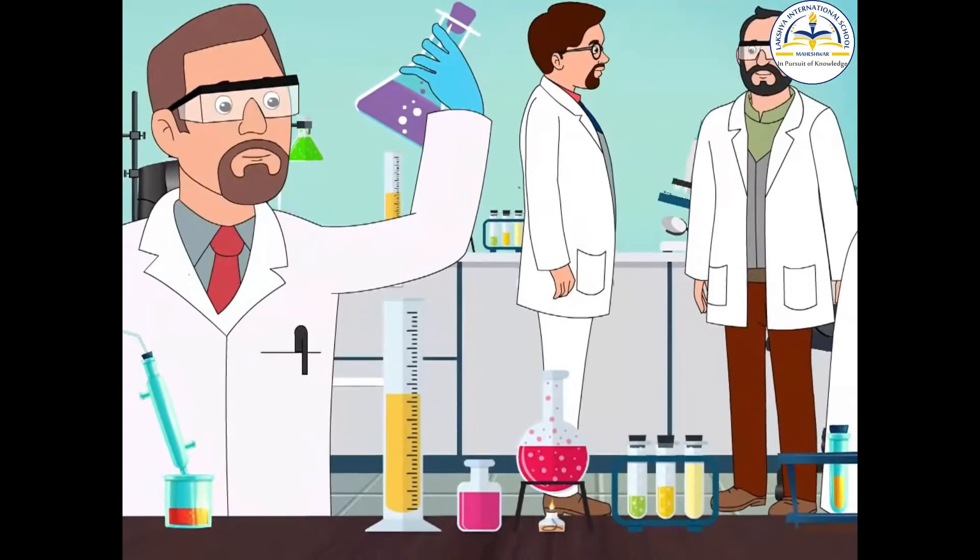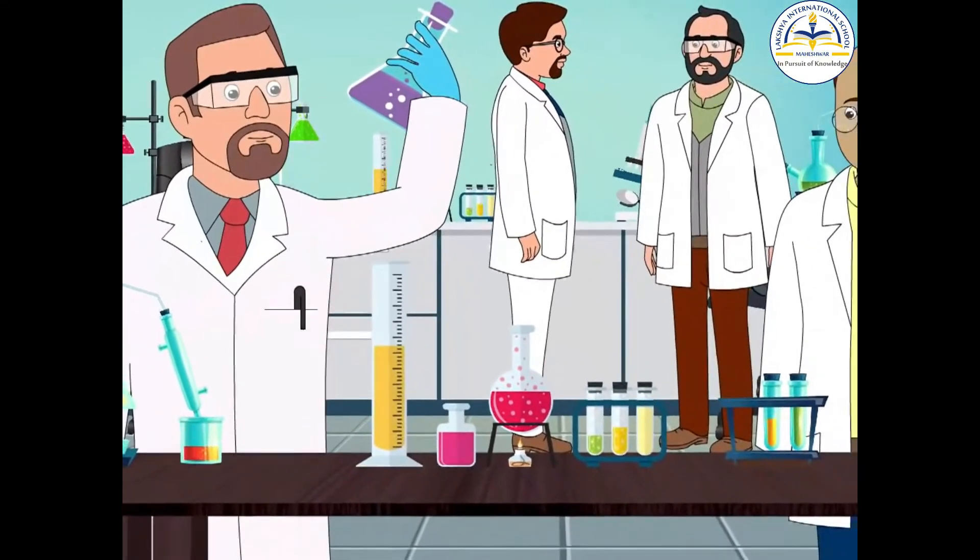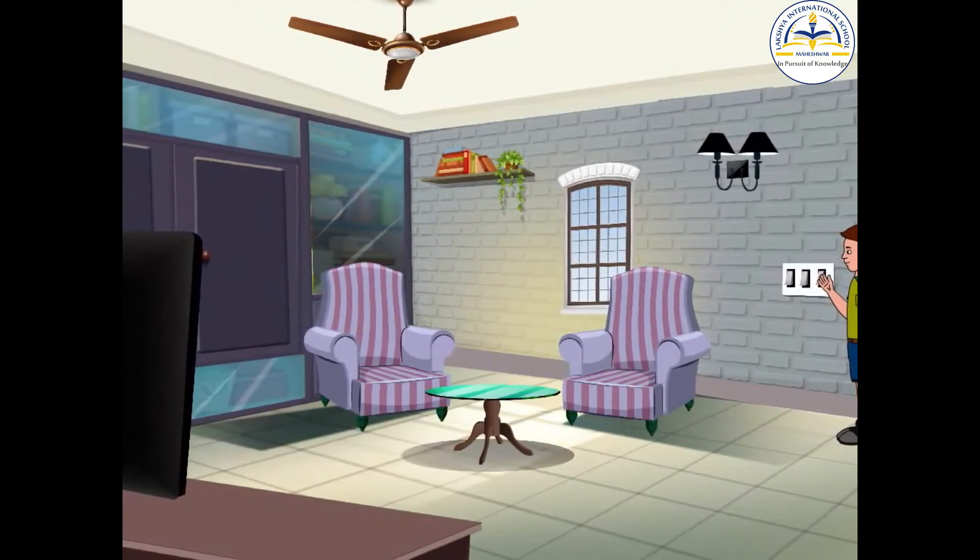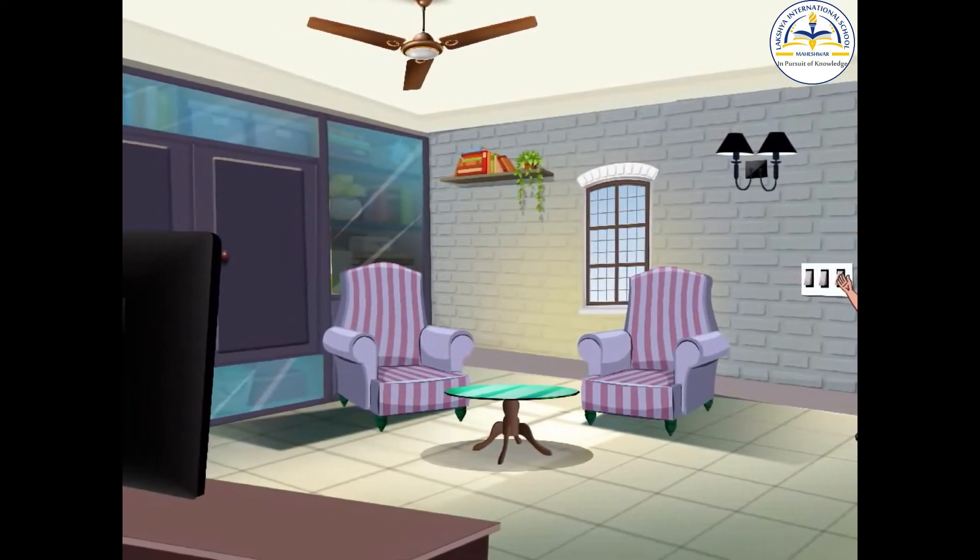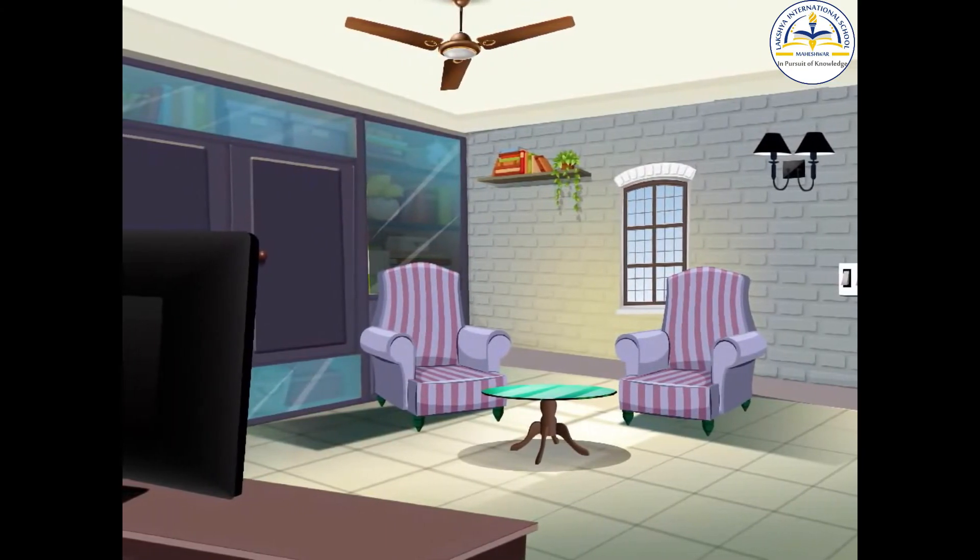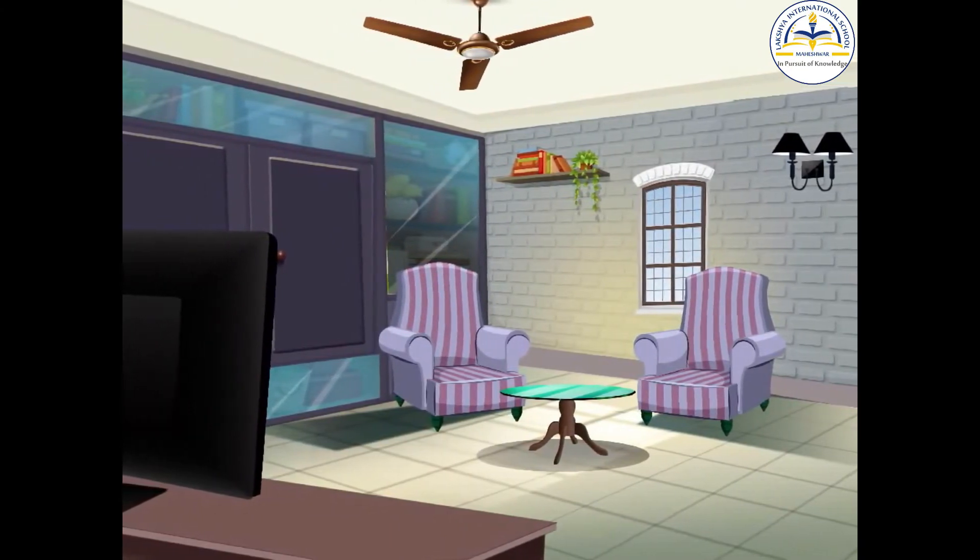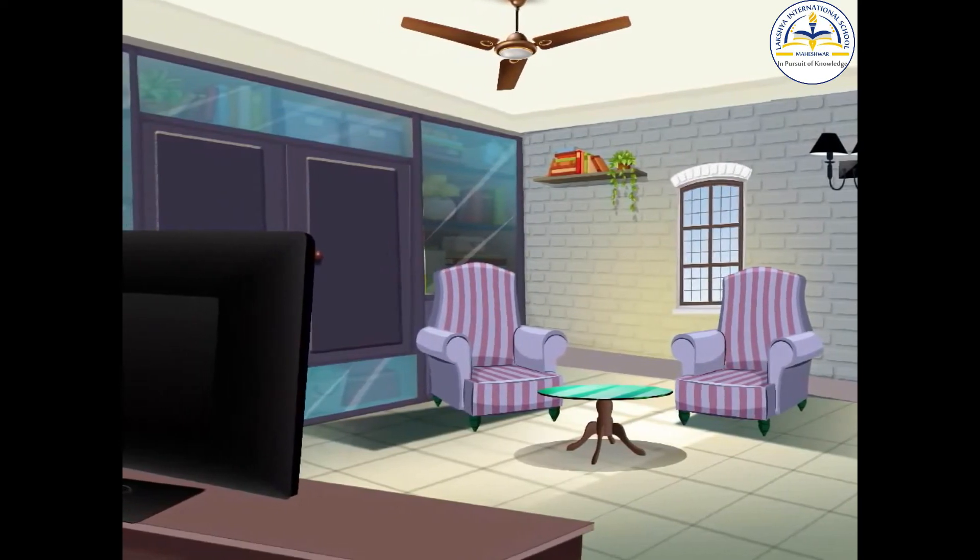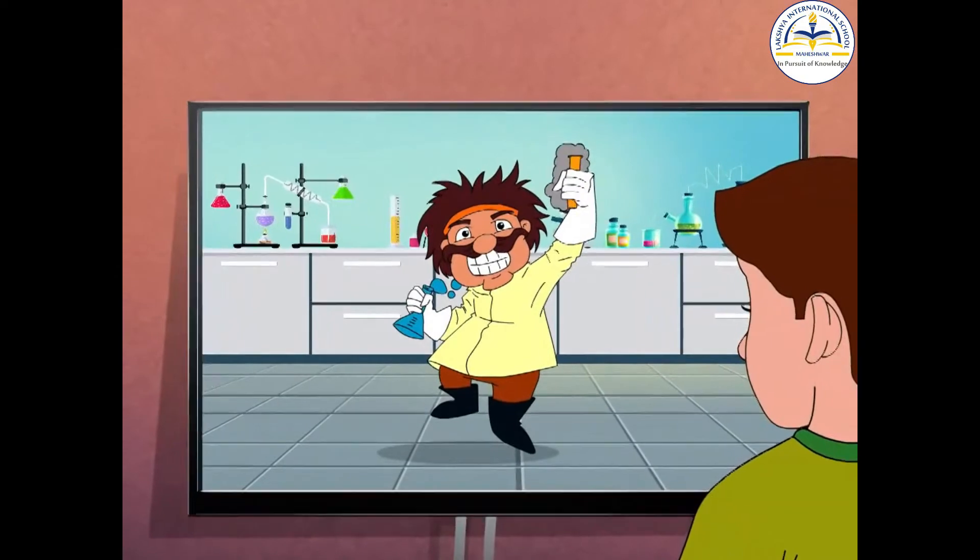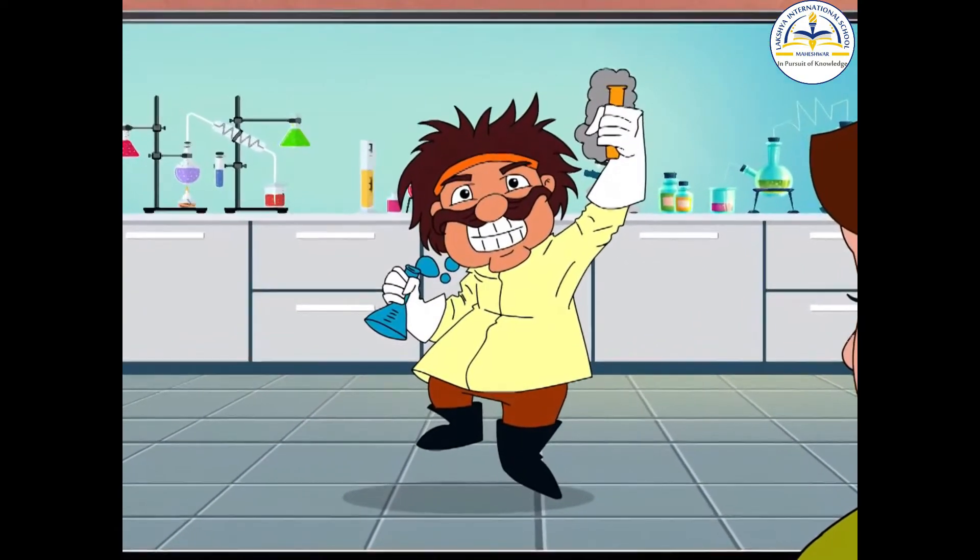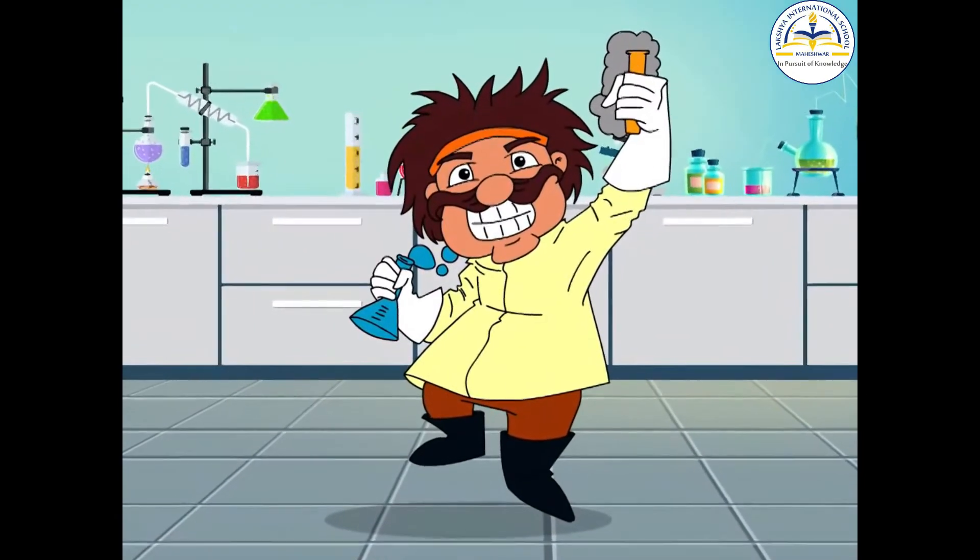At the moment, the public has a rather ambivalent attitude towards science. It has come to expect the steady increase in the standard of living that new developments in science and technology have brought to continue, but it also distrusts science because it does not understand it. This distrust is shown in the cartoon character of the mad scientist working in his laboratory to produce a Frankenstein.